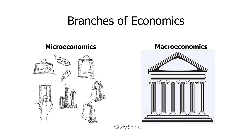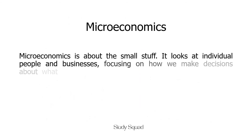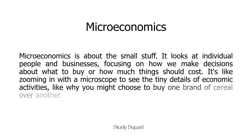Economics is divided into two main parts: microeconomics and macroeconomics. Microeconomics is about the small stuff. It looks at individual people and businesses, focusing on how we make decisions about what to buy or how much things should cost. It's like zooming in with a microscope to see the tiny details of economic activities, like why you might choose to buy one brand of cereal over another.